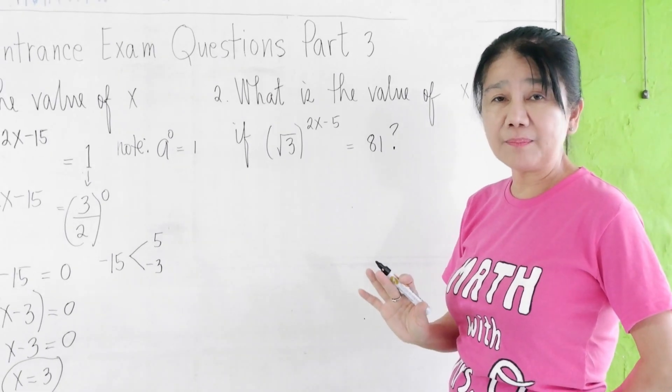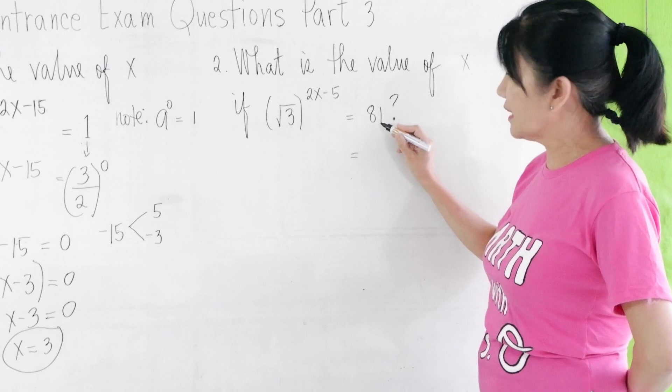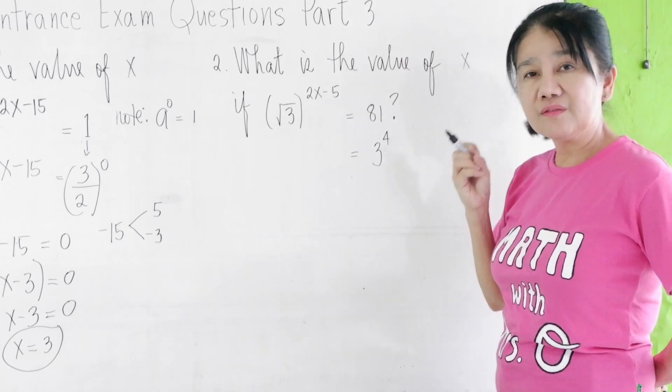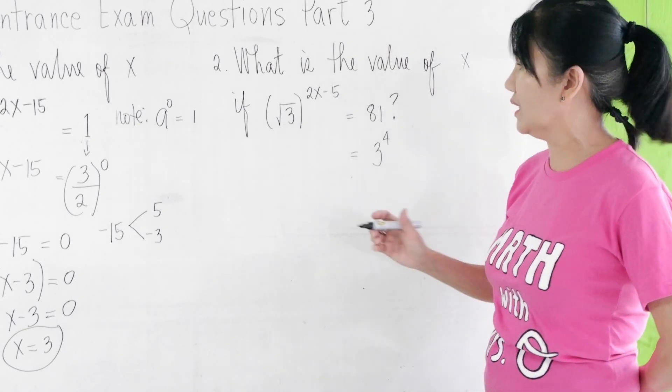Again, make the bases the same. We know too well that 81 is 3^4. Why? 3 times 3 is 9, 9 times 3 is 27, 27 times 3 is 81.